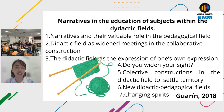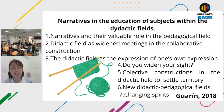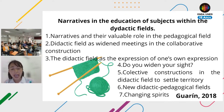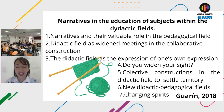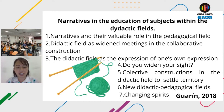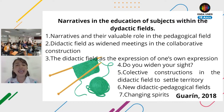Number five is about how collective constructions of language in the didactic field help us establish territory and personal identity. Number six is how teachers can continually innovate with different didactic pedagogical fields. Number seven — changing experience — has to do with how we as teachers change our own personal spirit when innovating, and how students' narratives help us understand how each person as an individual is different and builds their own territory in the didactic fields of the classroom.